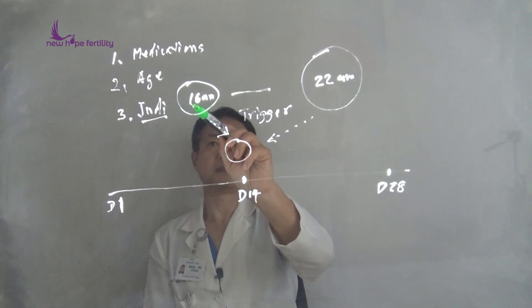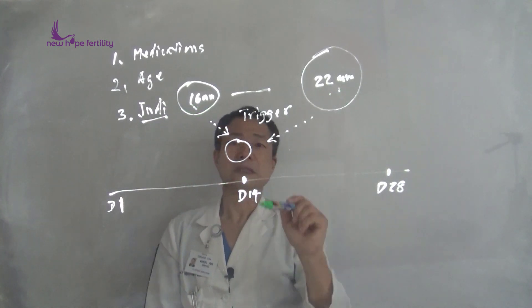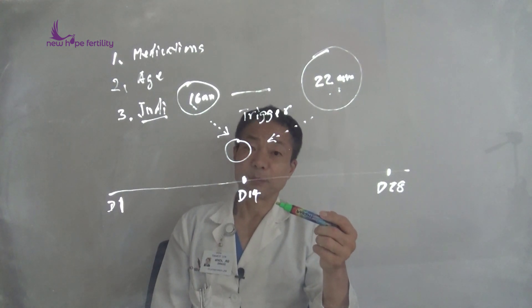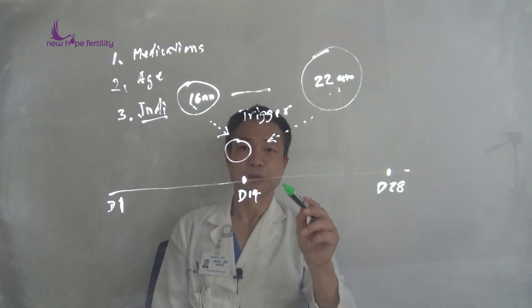Some ladies tend to ovulate early, some at 22 millimeters. So that's why natural cycle is very important to understand what might be the best or optimal size of follicle to be triggered.